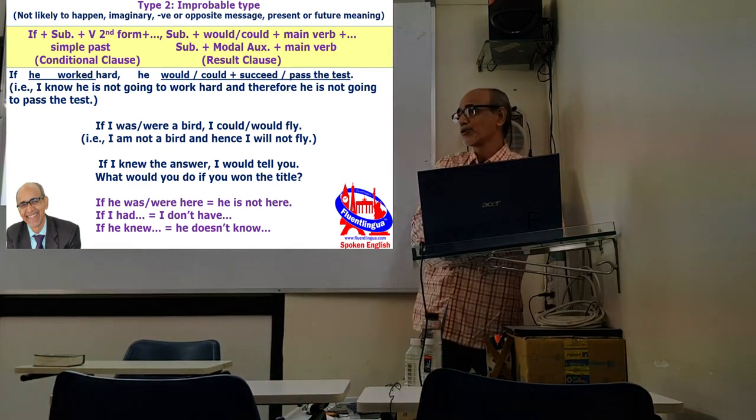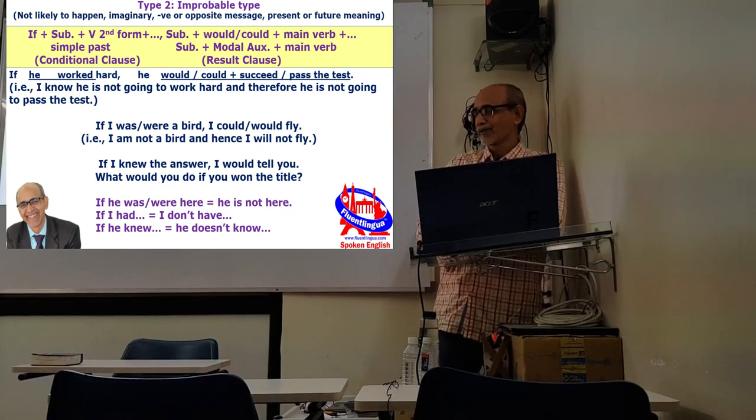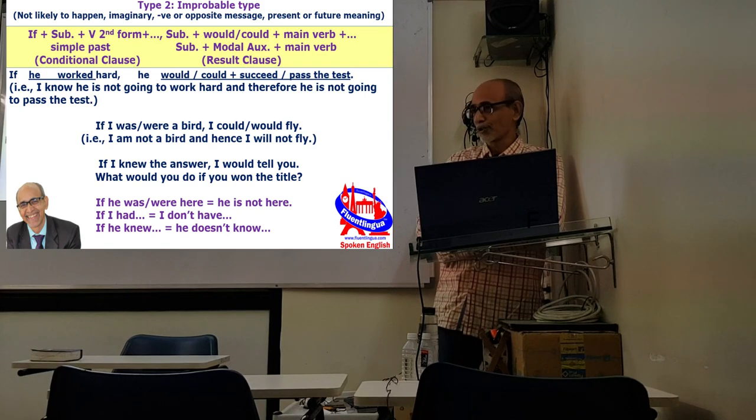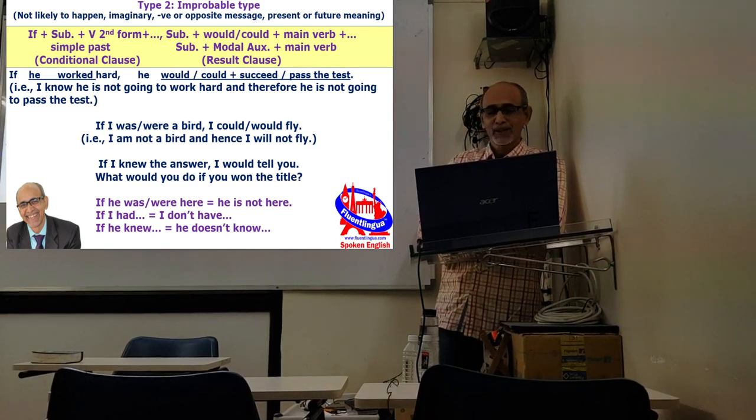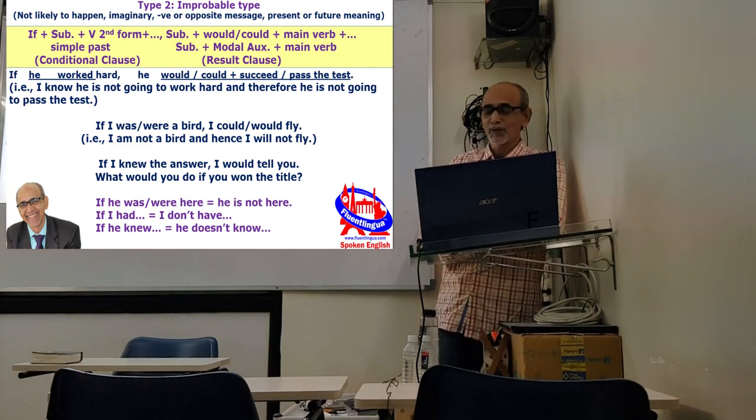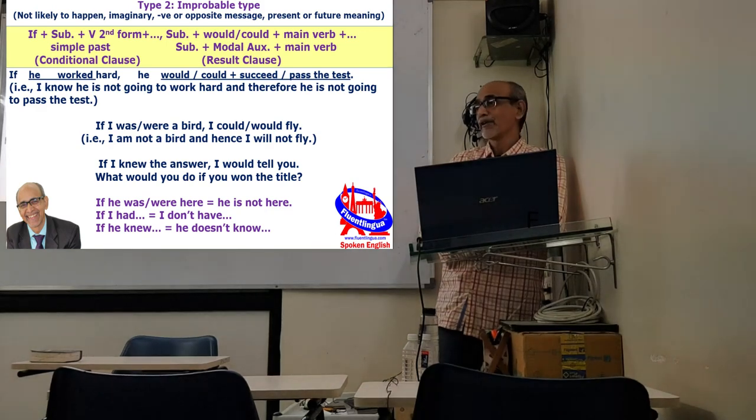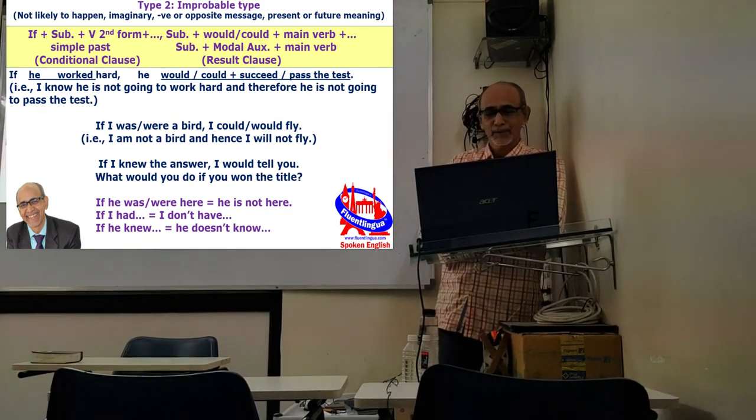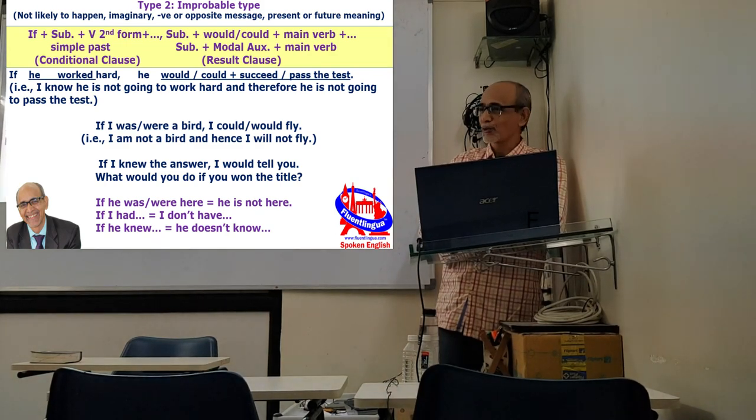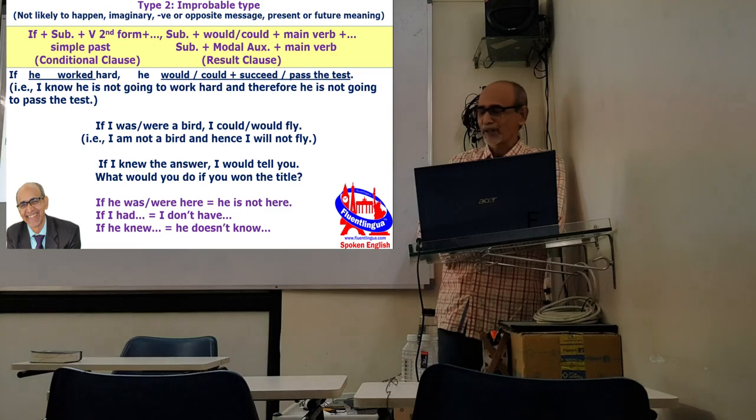That is why it is very often used in the titles of essays when you have to use some imaginary situation. If I was a bird means I am not a bird. And here we can use the past tense form was or were, both with I or he or she. If he was here or if he were here, both are possible. If I was a bird means I know I am not a bird and I will never develop wings, so I will never be able to fly. But still I say if I was a bird, I could fly or if I was bird, I would fly.